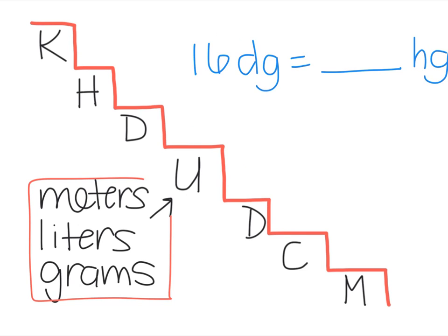It also works the other way. For example, I don't have to start on the unit stair, I can start on a different stair. Here we're going to start on the decagram stair and move to the hectogram stair. If we start on the decagram, in this case, we're going to move up one, two stairs, and we moved two stairs to the left. So where's the decimal in 16? It's right here, which means that I'm going to rewrite my number, moving the decimal two spaces to the left. In this case, it would be 16 hundredths of a hectogram.